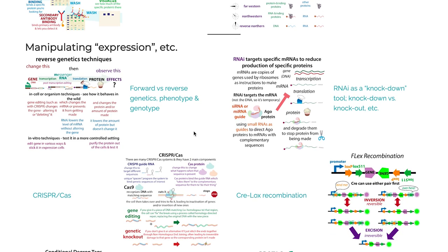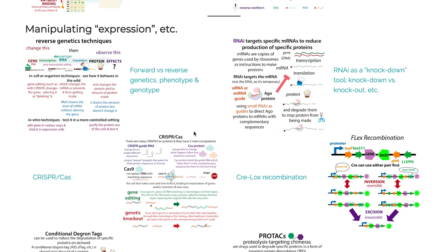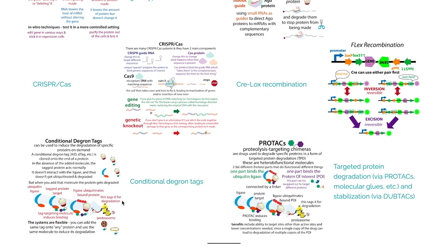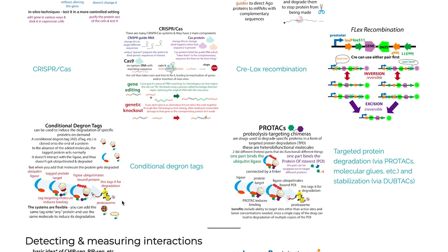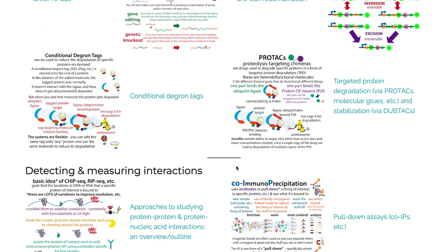I'll also talk about how we can manipulate expression and other things going on inside cells using techniques like CRISPR to edit the actual DNA — for a permanent effect. We can also use tools like Cre-lox recombination to do genetic editing on demand. We can use RNA interference to mess with just the messenger RNA levels and not the actual DNA — this would be a knockdown, whereas CRISPR could be a knockout. We can also manipulate things at the protein level using conditional degron tags, PROTACs, and other targeted protein degradation tools.